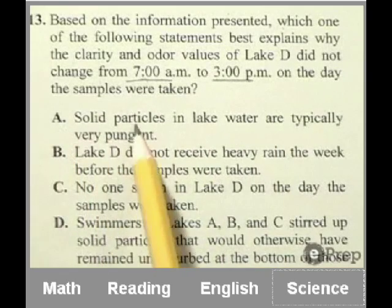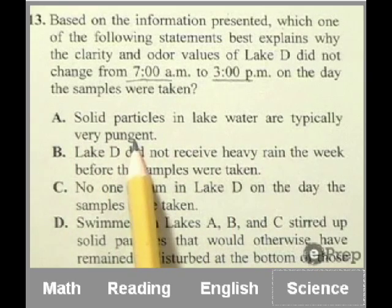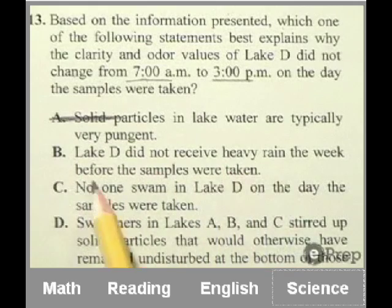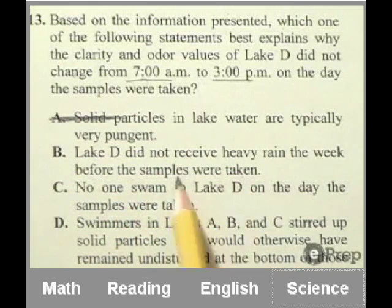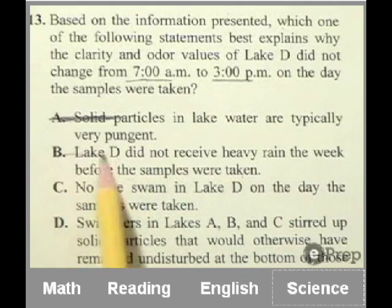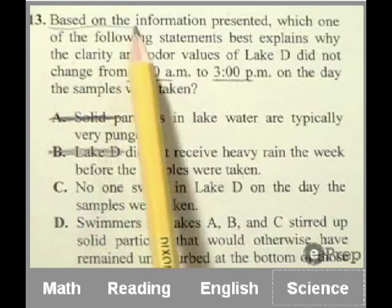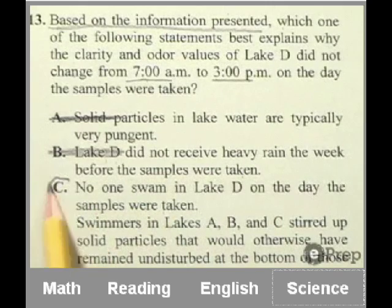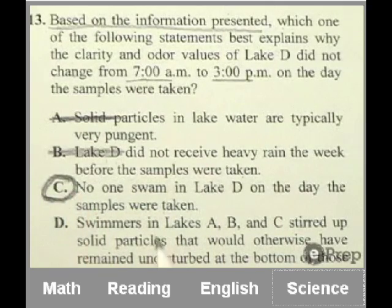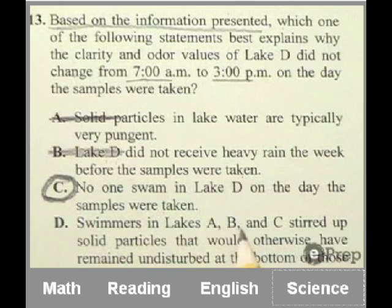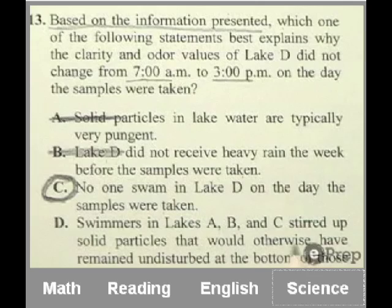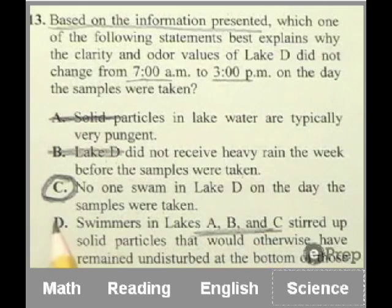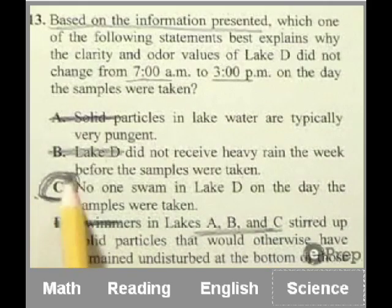So if nobody swam in the lake, it might have something to do with the fact that the odor and clarity values did not change from the morning sample to the afternoon sample. So take a look at A. Solid particles in lake water are typically very pungent. That's a very general statement and is not lake D specific. Lake D did not receive heavy rain the week before the samples were taken. I don't think it said anything in there about lake D getting or not getting heavy rain the week before. So I get rid of that one because it has to be based on the information presented. No one swam in lake D on the day the samples were taken. That sounds pretty reasonable based on my analysis just now. And D, swimmers in lakes A, B, and C stirred up solid particles that would otherwise have remained undisturbed at the bottom of those lakes. Giving me information about the other lakes doesn't help me with Lake D. I think C is definitely the best one. I would pick it with confidence and move on.